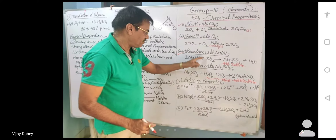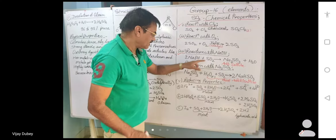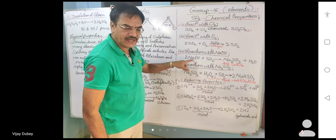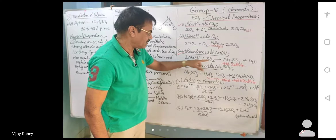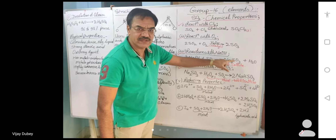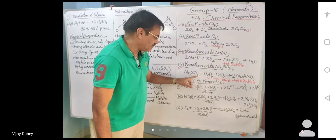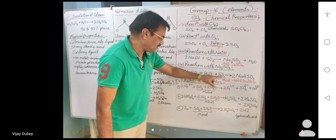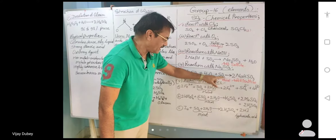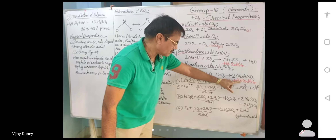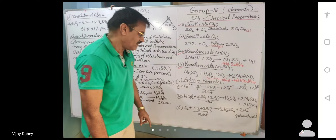This reaction is a continuation: sulfur dioxide reacts with NaOH to form sodium sulfite. Then sodium sulfite reacts with moist sulfur dioxide to form sodium bisulfite.